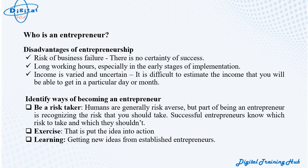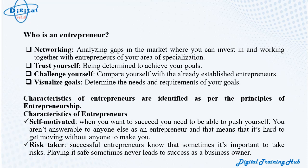Ways of becoming an entrepreneur: Be a risk taker — while humans are generally risk averse, part of being an entrepreneur is recognizing the risks you should take; successful entrepreneurs know which risks to take. Exercise — put ideas into action. Learning: get new ideas from established entrepreneurs. Networking: analyze gaps in the market and work together with entrepreneurs in your area of specialization. Trust yourself and be determined to achieve your goals. Challenge yourself by comparing with established entrepreneurs. Visualize goals by determining the needs and requirements to achieve them.